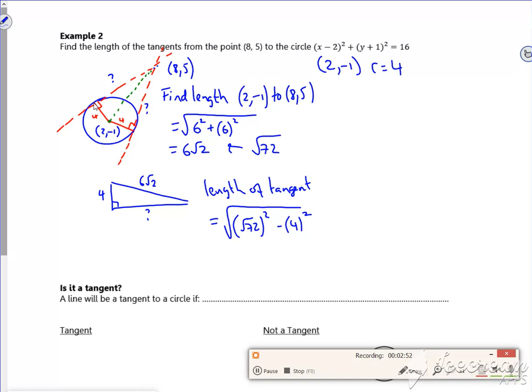Which should give us a root 56, which comes out as 2 root 14. And both them lengths are the same length.